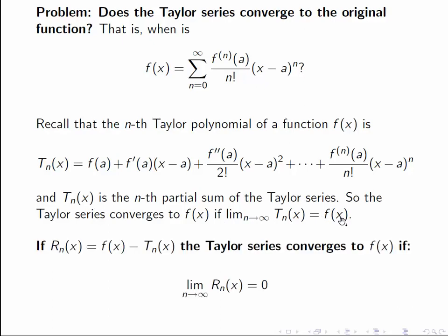We're going to restate it in terms of the remainder. We let R_n of x be f of x minus T_n of x, and then the Taylor series converges to f of x if the limit as n tends to infinity of this remainder is equal to zero. In that case, we get this result here.